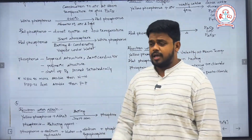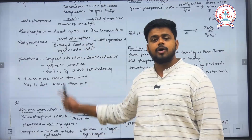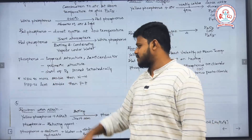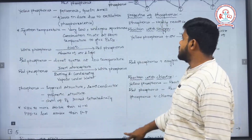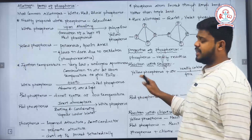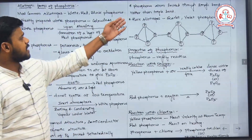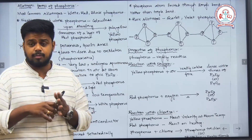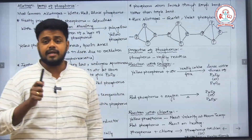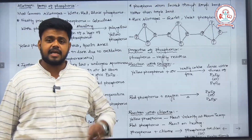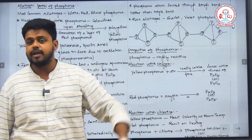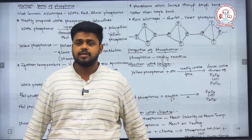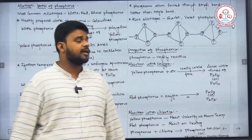Comparing the bonding in nitrogen and phosphorus: the triply bonded nitrogen is more stable than the singly bonded nitrogen, whereas in phosphorus, the singly bonded phosphorus is more stable than the triply bonded phosphorus — vice versa. Phosphorus atoms are linked to each other through single bonds rather than triple bonds. The rare allotropes of phosphorus are scarlet and violet phosphorus.